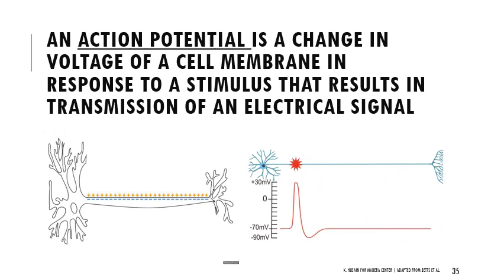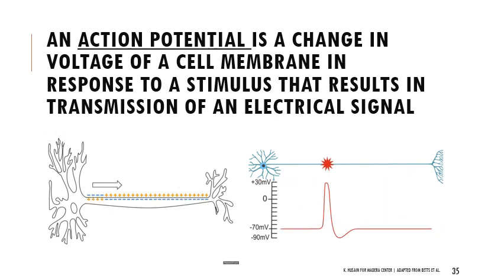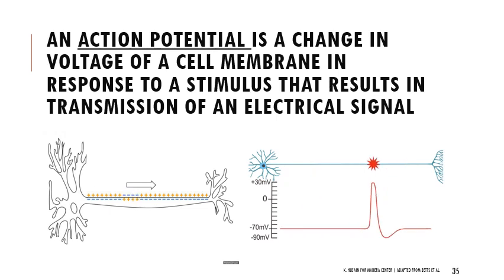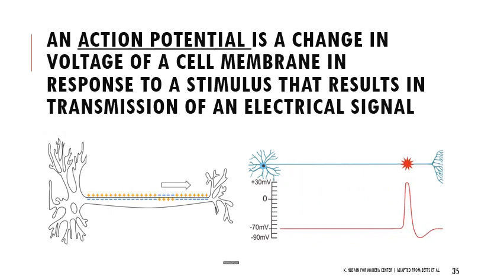During the period when the cell is reacting - through the action potential and hyperpolarization back to resting membrane potential - it can't react to something else. So we have what are called refractory periods where you can't do anything else until things get back to the way they were before.